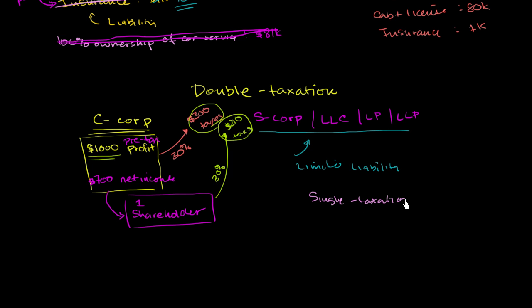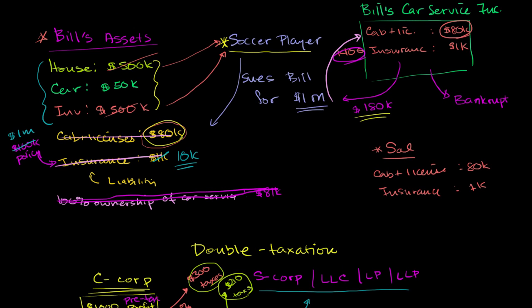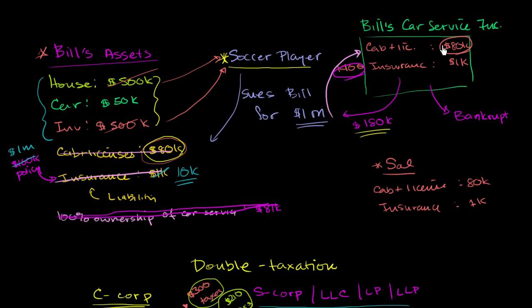So going back to the fairness issue, if Bill was smart when he started this company, he probably would set this up as a limited liability corporation or an S corporation or something where he doesn't have to get double taxed and still he would avoid having to pay the soccer player the full million dollars. Just whatever the company has, that's all the soccer player would get. But let's say the car service becomes huge and he wants to make it public one day, then he would have to make it a C corporation and do the whole double taxation.